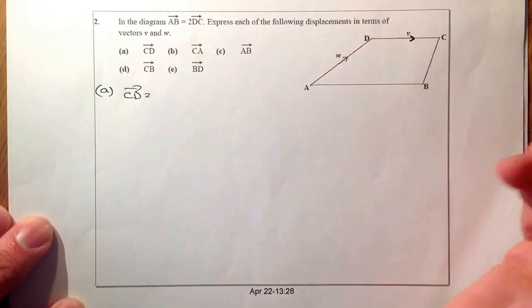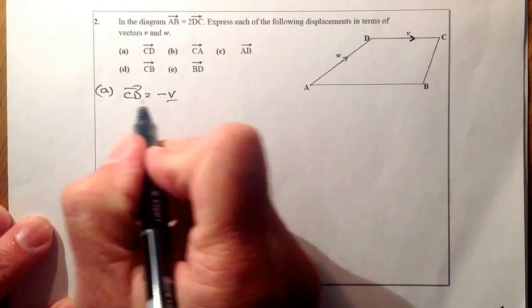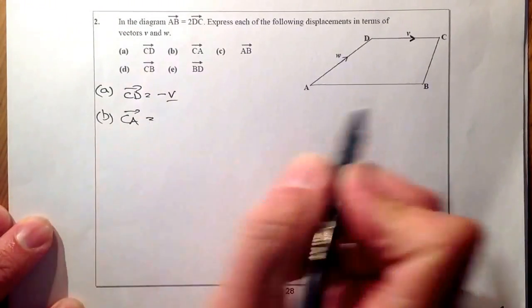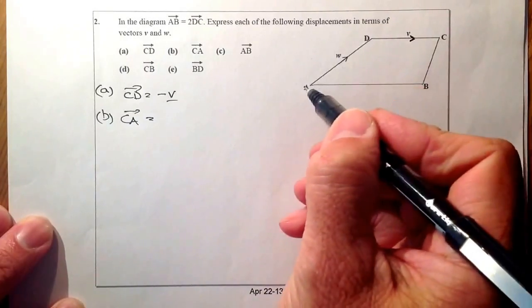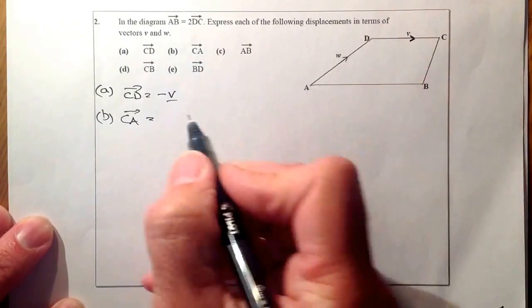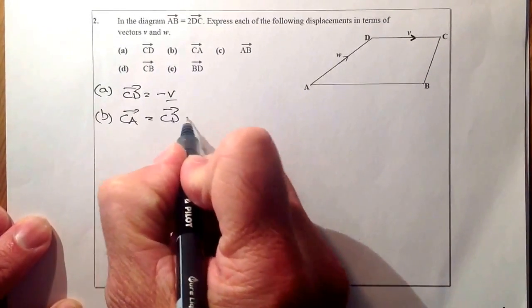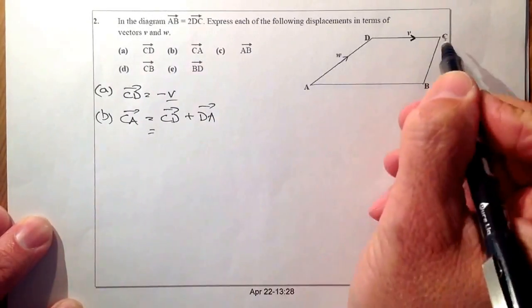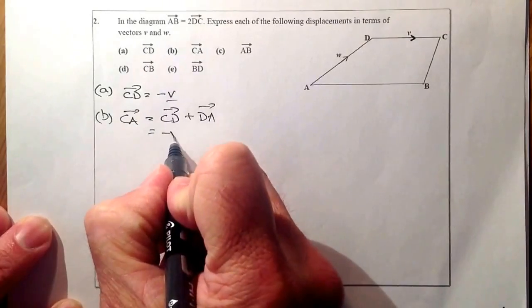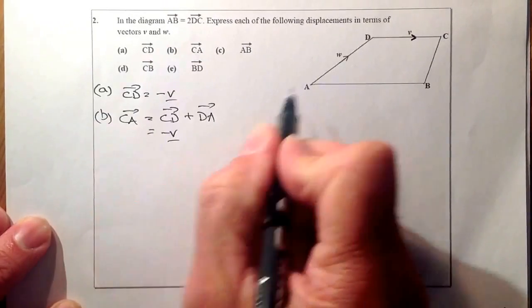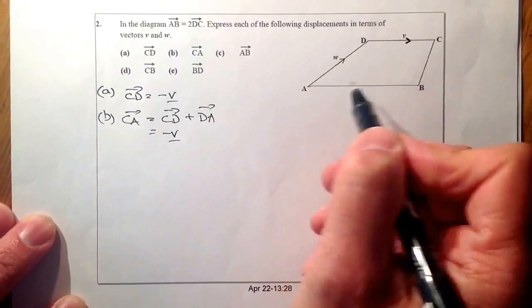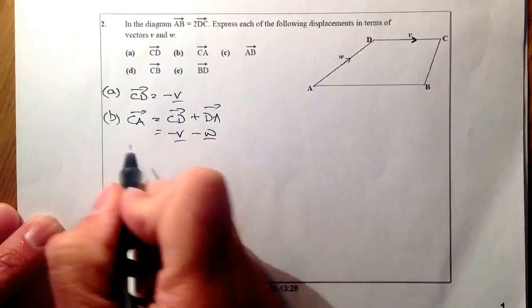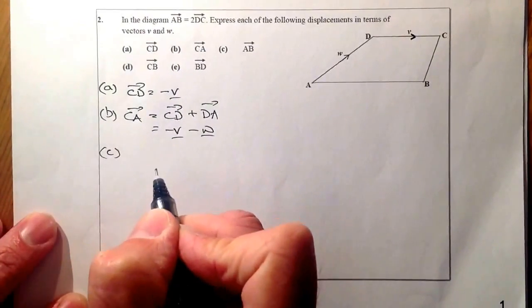So let's look at the vector CD. So from C to D, it's the opposite direction of V, so it's going to be minus V. Part B, we're looking at C to A. C to A, let's go down this route here. So that would be C to D first of all, and then D to A. From C to D, it's minus V. And what we've got is from D to A, it's minus W. So minus W. So I can just leave it like that there.